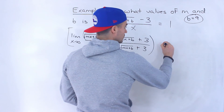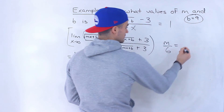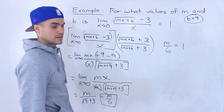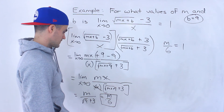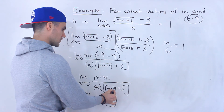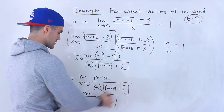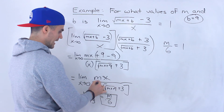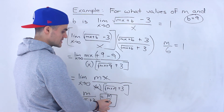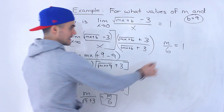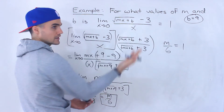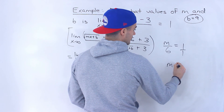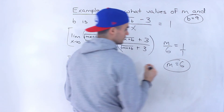So we know m over 6 has to equal 1, because we're told the limit equals 1. Square root of 9 is 3, and 3 plus 3 is 6 in the denominator, with m on top. So m over 6 equals 1 — we cross-multiply and get m equals 6.